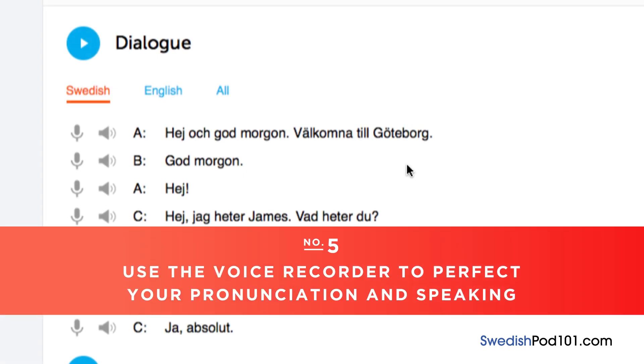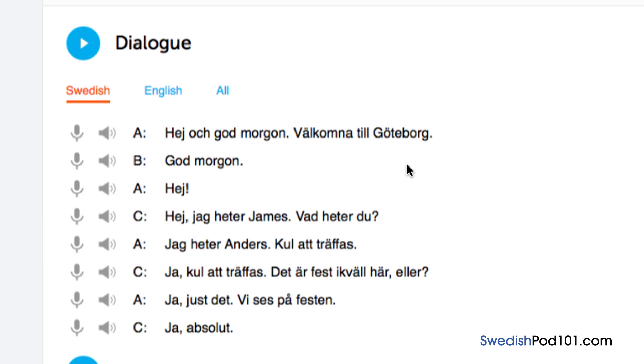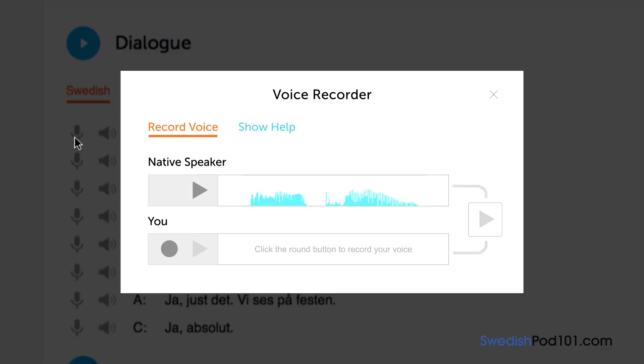Fifth, use the voice recorder to perfect your pronunciation and speaking. In the dialogue study tool, you'll find a microphone icon next to each line. Click on it to record your voice. Then, compare it with the native speakers. Listen and adjust your pronunciation until you match that of the native speaker.